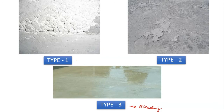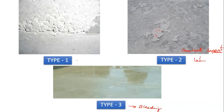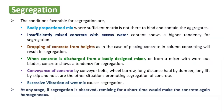The image shows the three types of segregation. This is laitance — cement and water getting separated. When they separate and come to the top, upon hardening a thin film of cement is formed, which is going to be weak and form cement dust. This is the first type — separation of the coarse aggregate from the rest of the matrix.